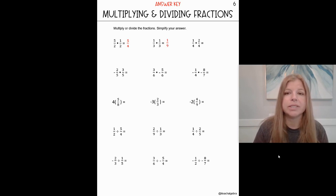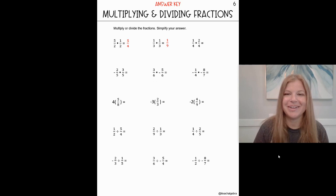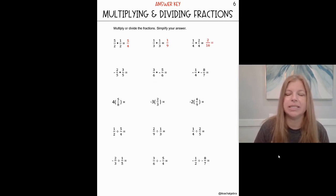Next one: one fourth times two fourths. One times two is two, four times four is sixteen. Now we can simplify two sixteenths — they're both divisible by two — and that would end up giving us one eighth.